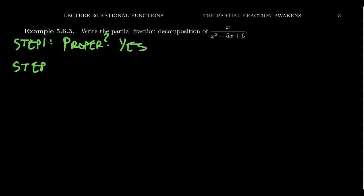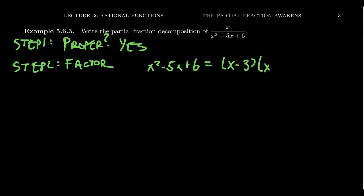The next step is to factor the denominator. We have x squared minus 5x plus 6. It's a horrible thing that someone multiplied it out — like you had your perfect figurine of all your bobblehead Marvel characters, and then the 3-year-old came and knocked them all over. Now this one's not too hard to pick up. We need factors of 6 that add up to be negative 5. We can get away with x minus 3 and x minus 2, so we rewrite the original fraction as x over (x minus 3)(x minus 2).